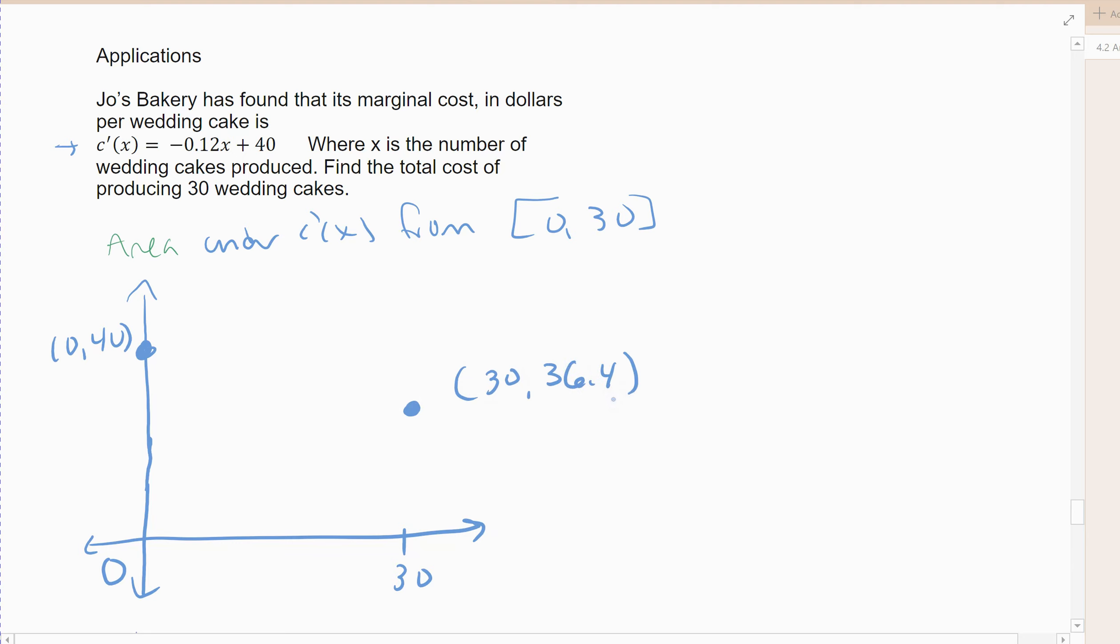All right, and so there's my, and it's a line, right? Slope is negative 0.12. Y-intercept is 40. Connect the two dots and draw a line. It is a straight line. And so there's my derivative.